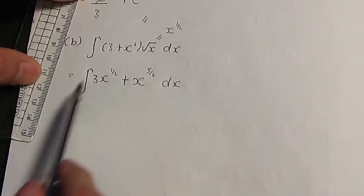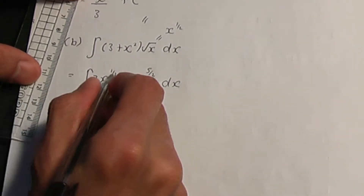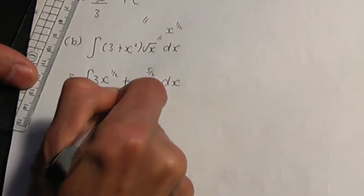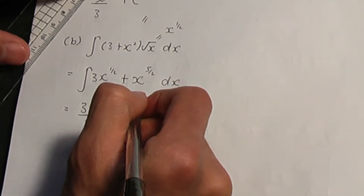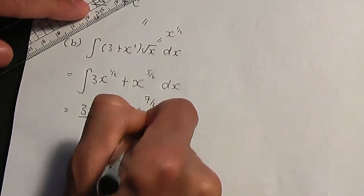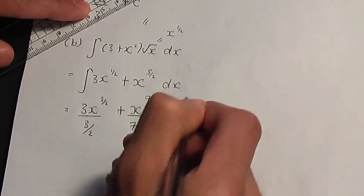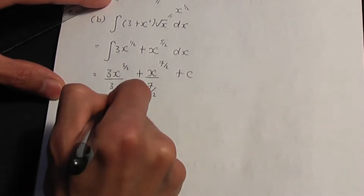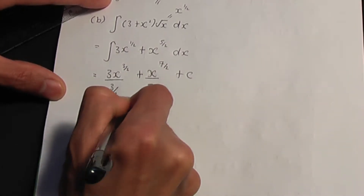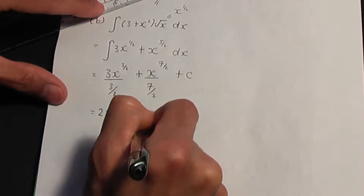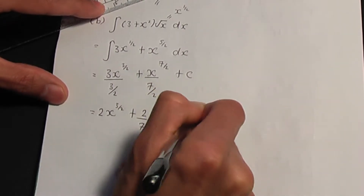We've expanded the bracket, so now we're ready to integrate. When I integrate 3x to the half, add 1 to the power: half plus 1 is 3 over 2. Divide by that result, 3 over 2. Plus, when I integrate x to the power 5 over 2, add 1 to the power: 5 over 2 plus 1 is 7 over 2. Divide by 7 over 2. And you must add a constant of integration.